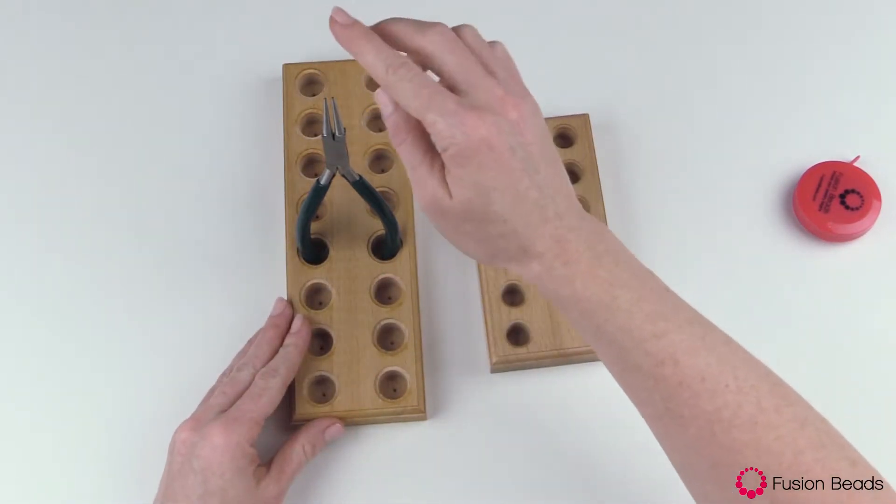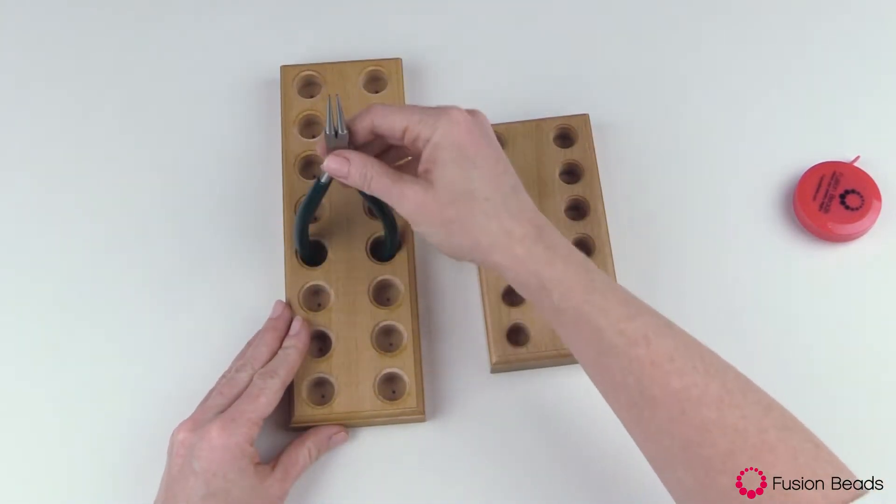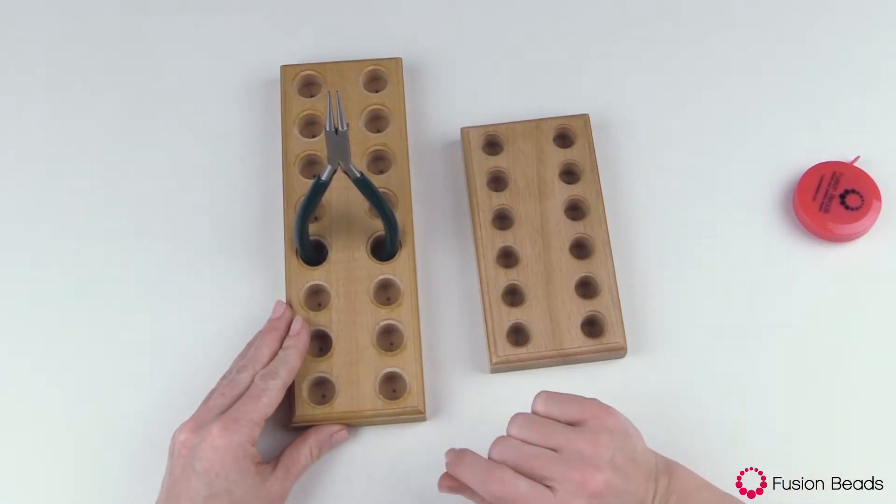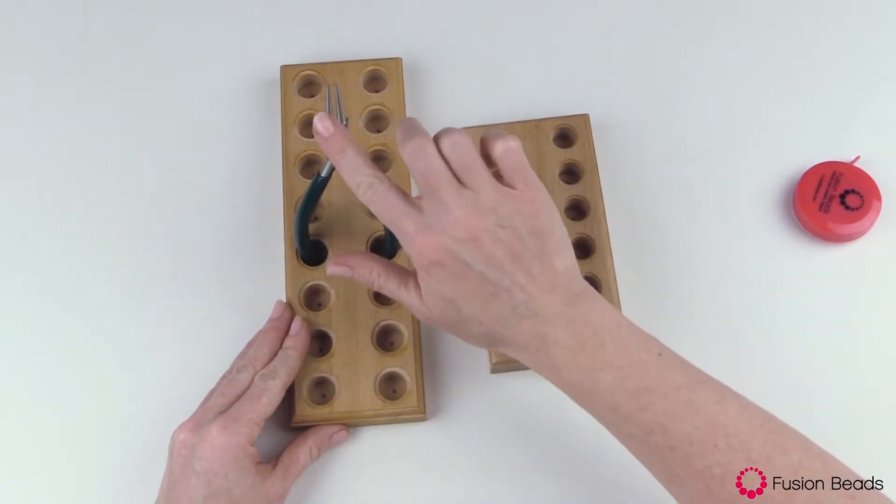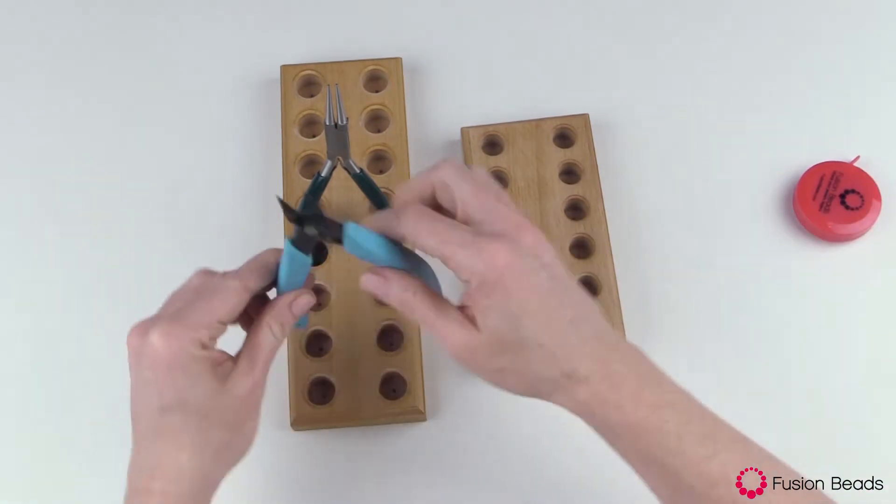Which means your tips are actually facing up, so when you're doing your projects and you want to go reach for a pair of pliers, you'll know which one you want because you'll see what their tips are.